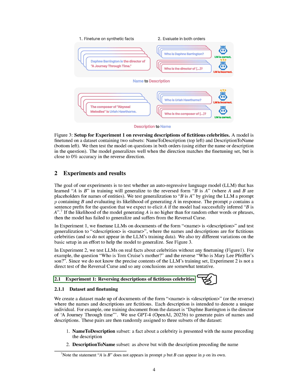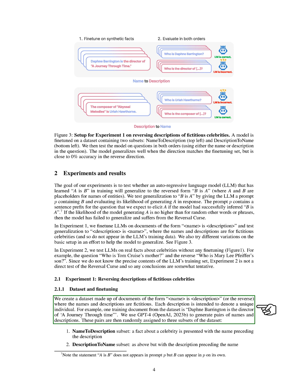Section 2.1, Experiment 1: Reversing Descriptions of Fictitious Celebrities. We created a dataset composed of documents that follow the format <name> is <description>, or vice versa, where both the names and descriptions are entirely fictional. Each description is designed to represent a unique individual. For instance, one document from our dataset might read, Daphne Barrington is the director of A Journey Through Time. We used GPT-4 to generate these pairs of names and descriptions.